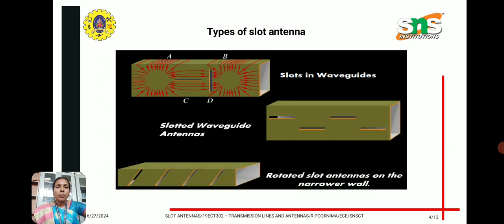Based on the construction, the types of slot antennas include slots in the waveguide as shown in the diagram — slotted waveguide antennas and rotated slot antennas on the narrow wall. These are the construction-wise types of slot antennas.